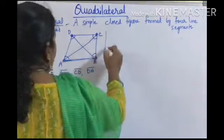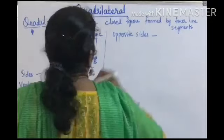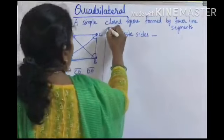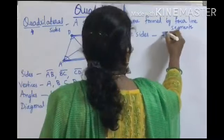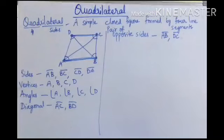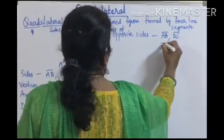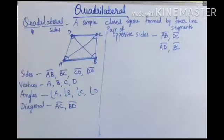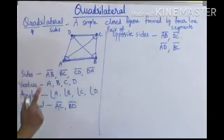Next we will write the pairs of opposite sides. AB is opposite to DC, so AB and DC are one pair of opposite sides. And AD is opposite to BC, so AD and BC are another pair. So you are going to get two pairs of opposite sides in a quadrilateral.